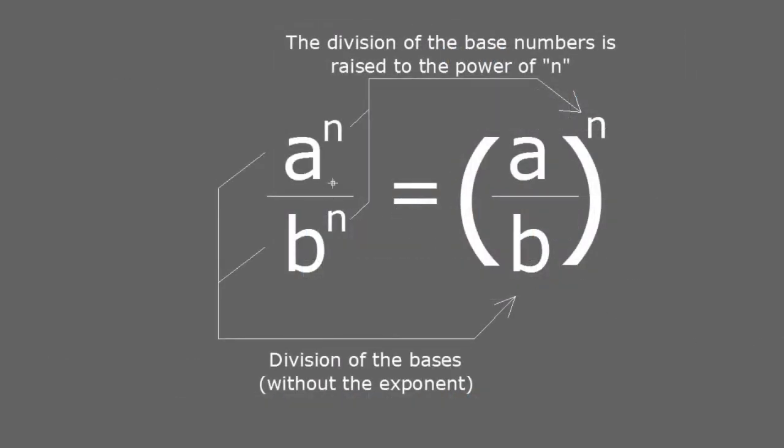Remember, if we have a to the power of n divided by b to the power of n, different base numbers, same exponent, keep that exponent, and that exponent applies to the division of the base numbers without the exponents, a over b, parenthesis, raised to the power of n.